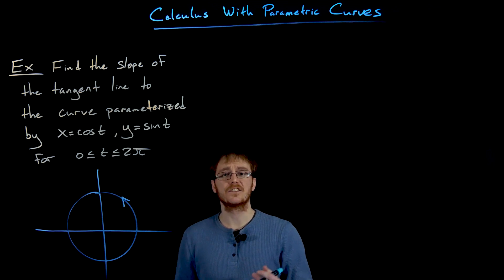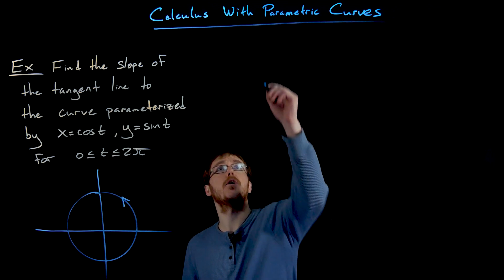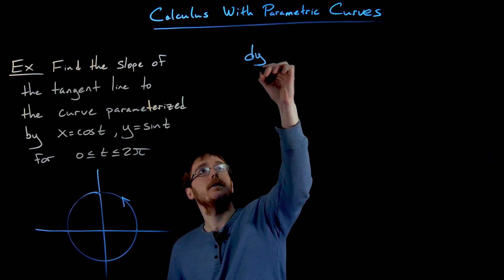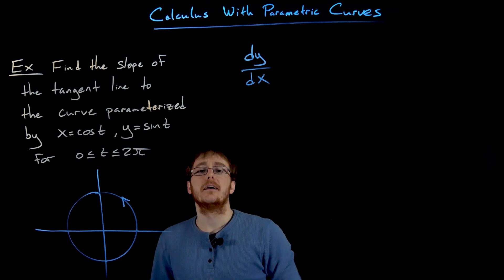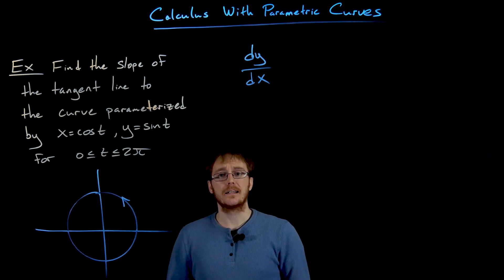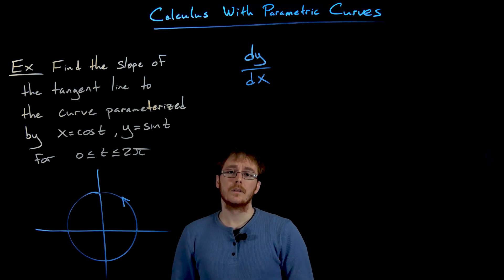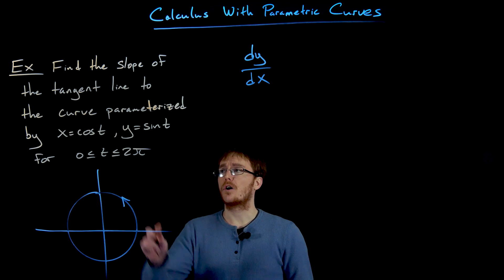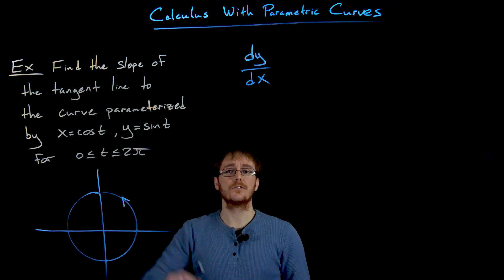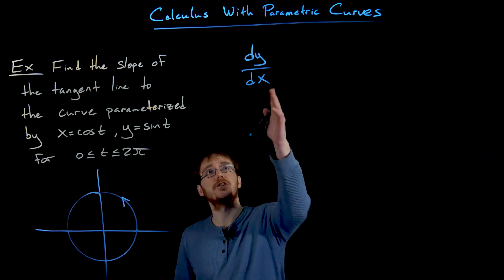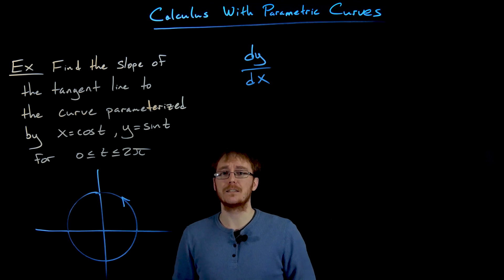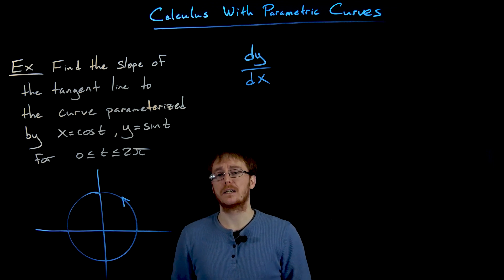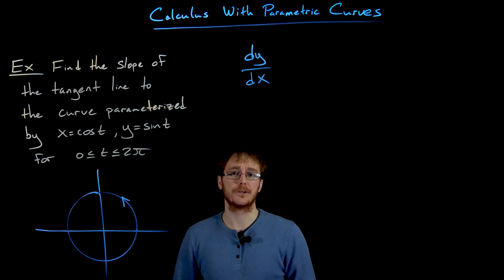We're asked to find the slope of the tangent line for our unit circle, and we know that the slope of the tangent line is given by the derivative dy/dx. We need to figure out how to use our parameterization — which involves our parameter t — to construct the derivative dy/dx, which we may eventually express in terms of t.